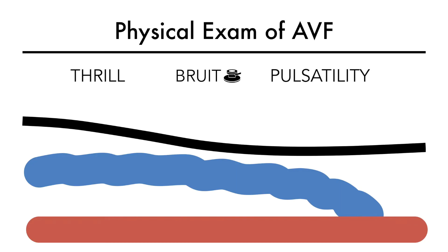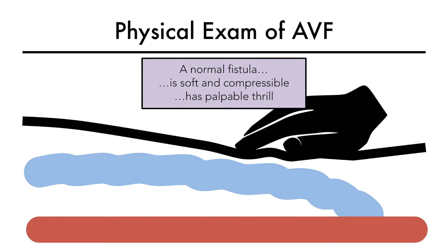A normal fistula is soft and compressible and has a palpable continuous thrill, as in a vibration or buzz, which indicates uninterrupted flow through it. Remember, thrill equals flow. No flow or low flow means no thrill or weak thrill.